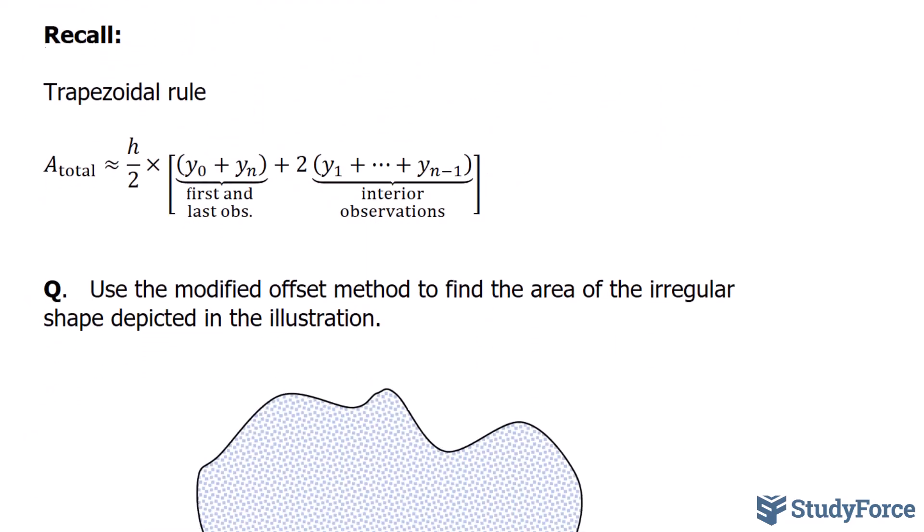Now, just for reference, I have the trapezoidal rule shown here. This is a formula that approximates the area once data has been collected.